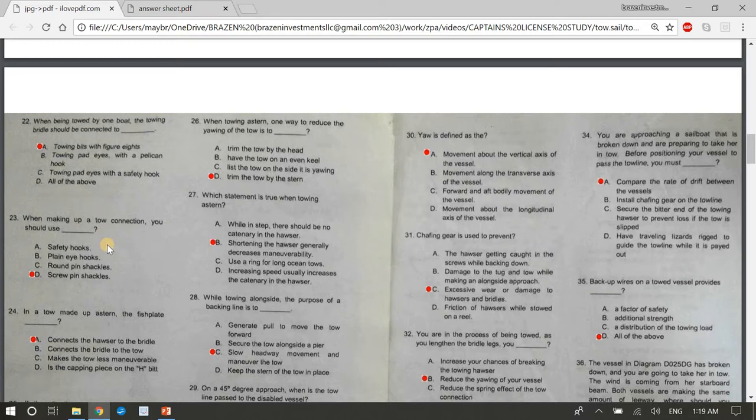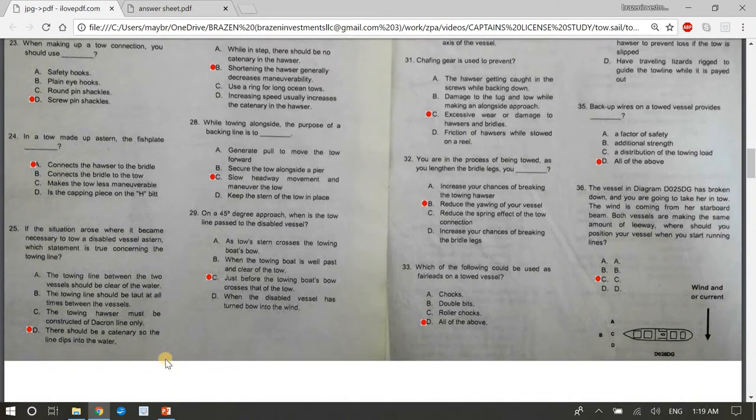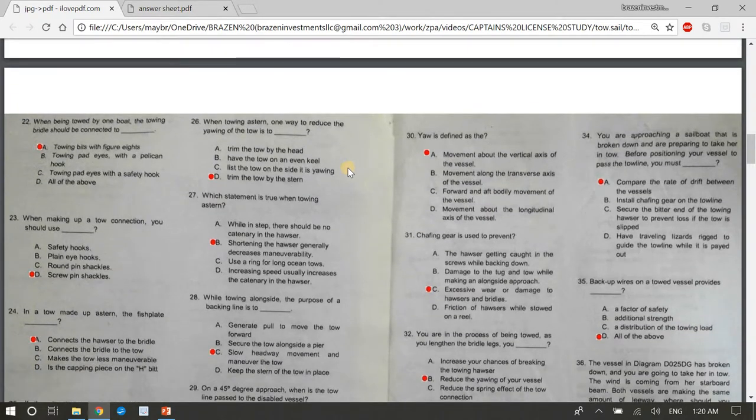23, when making up a tow connection you should use blank. The answer is D, screw pin shackles. 24, in a tow made up astern the fish plate, blank. The answer is A, connects the hauser to the bridle. 25, if the situation arose where it became necessary to tow a disabled vessel astern, which statement is true concerning the tow line? The answer is D, there should be a catenary so the line dips into the water. 26, when towing astern one way to reduce the yawing of the tow is to D, trim the toe by the stern.